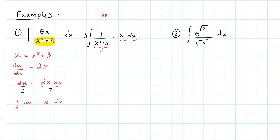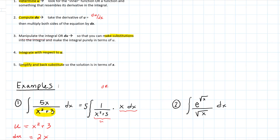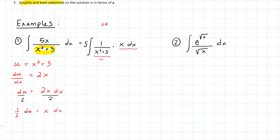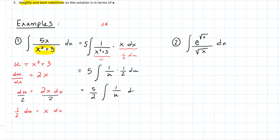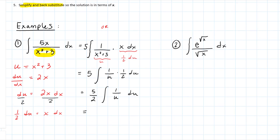Another option would be to manipulate within the integral itself: put 2x dx in the integral and then divide by 2 outside. When doing substitution, you can either manipulate the integral or manipulate the du — that's up to you. Now making the substitutions: this becomes 1/u, and x dx becomes ½ du. I still have the 5 outside, giving 5 × integral of (1/u)(½ du).